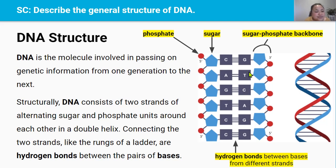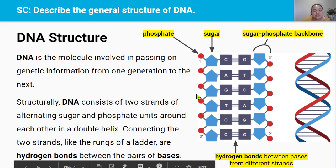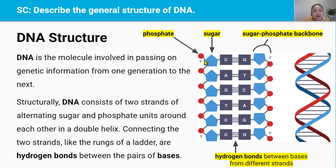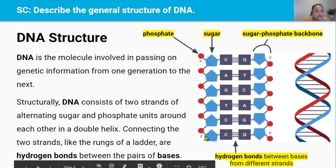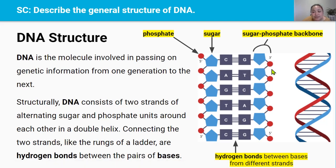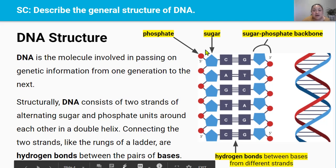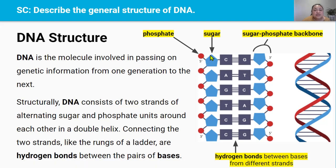DNA is also said to be anti-parallel, which means that the two strands of DNA run in opposite directions. So this strand here runs in the 5' to 3' direction, whereas this strand here runs in the 3' to 5' direction. In this strand, the pentagons are pointing the right side up, but in this strand, the pentagon is pointing with the pointed side down. That's how we know they're running in opposite directions.